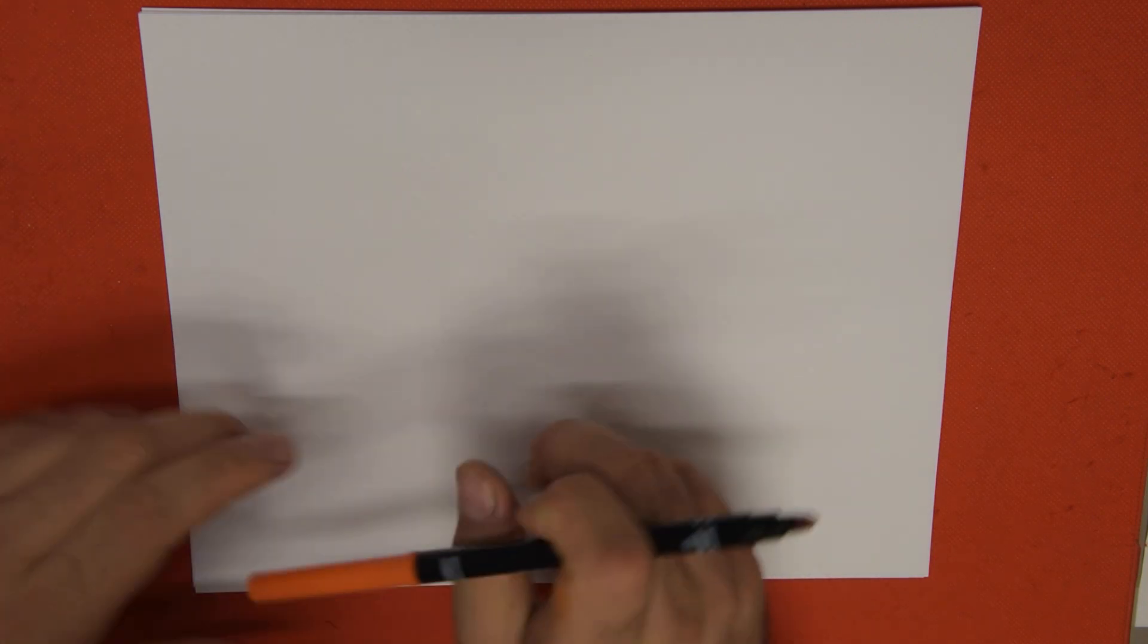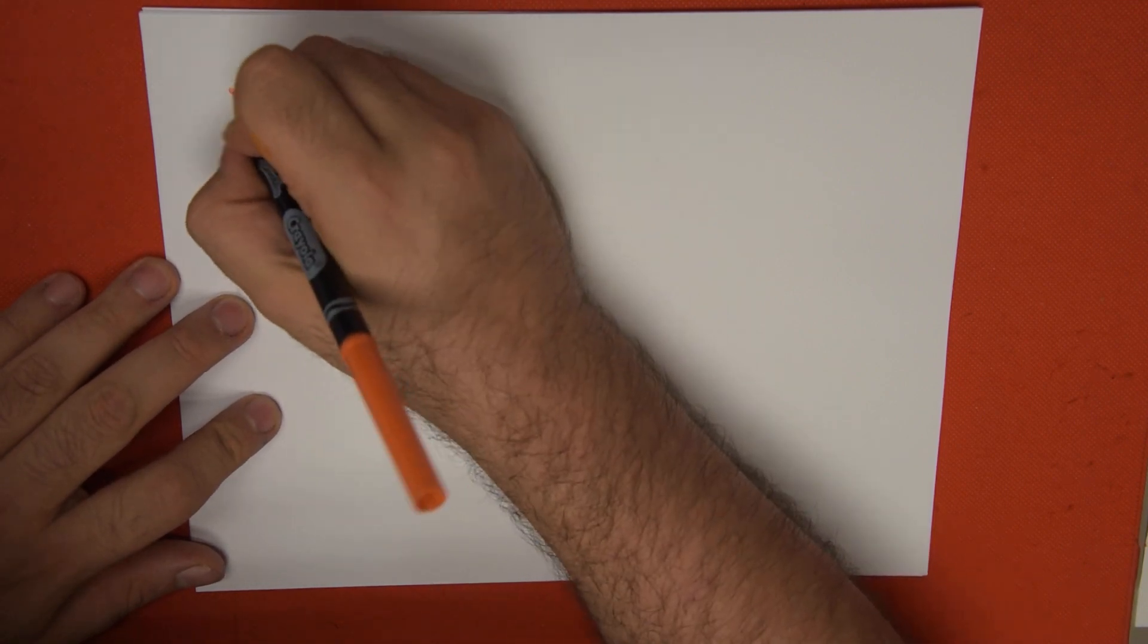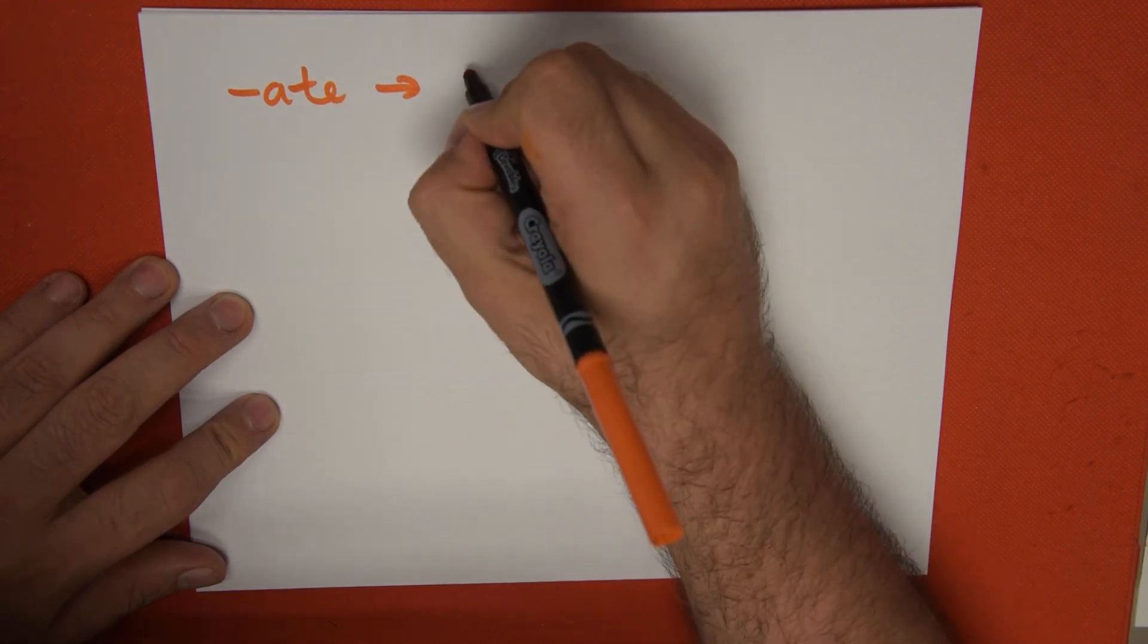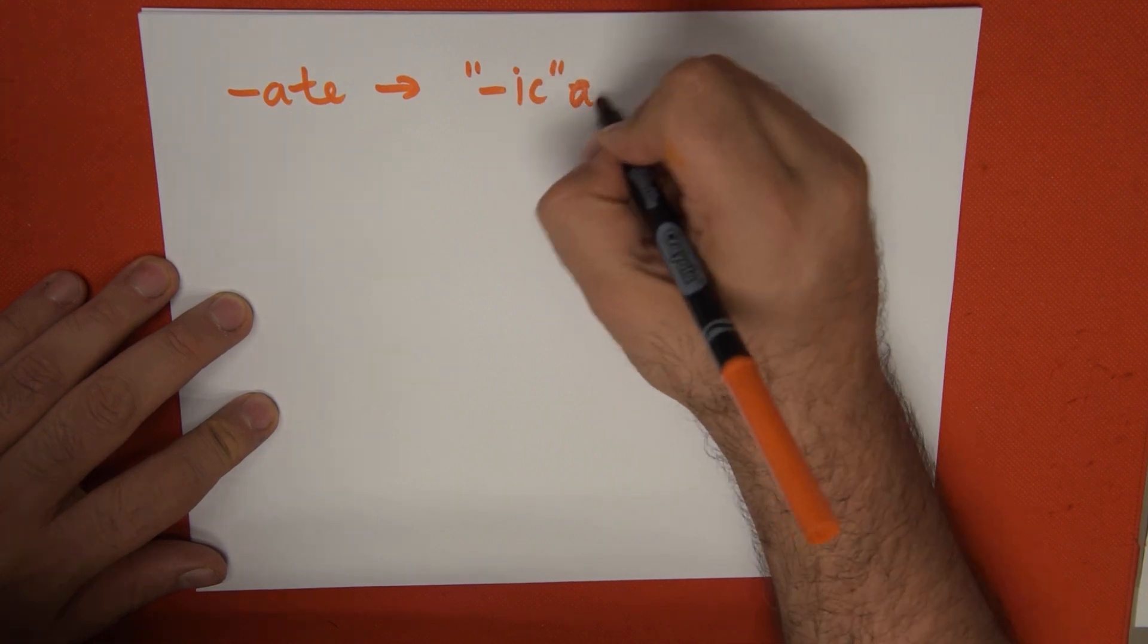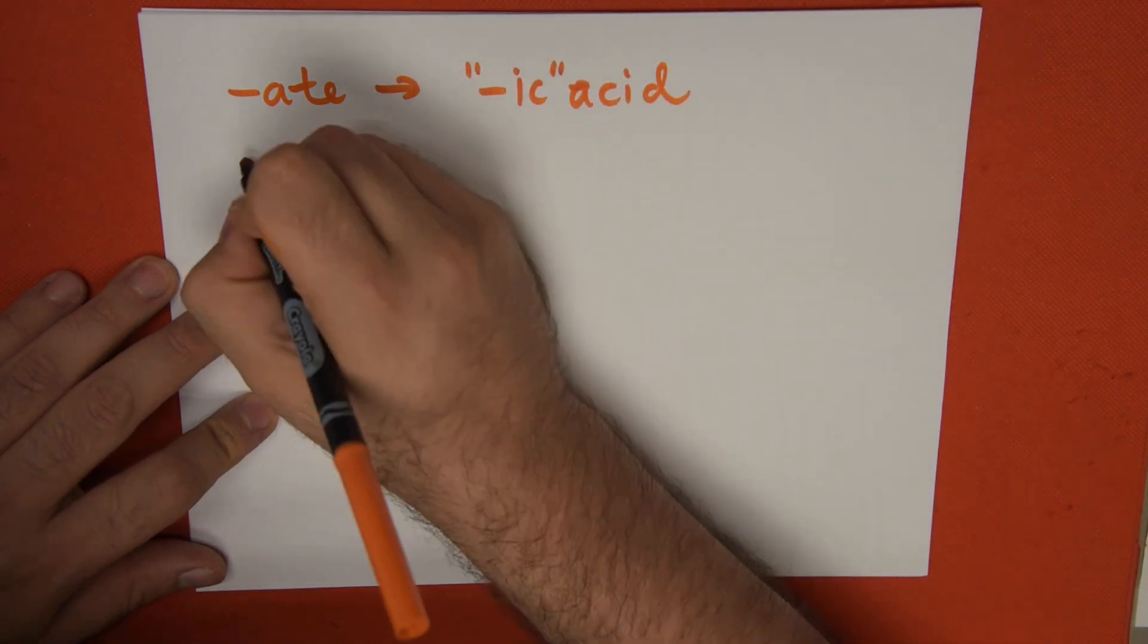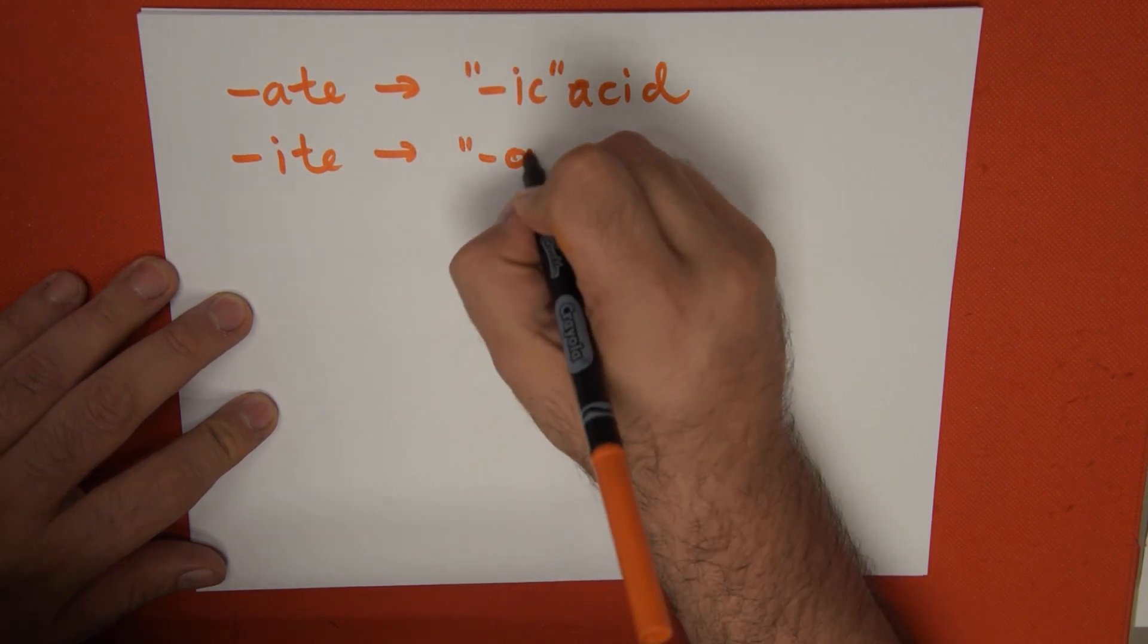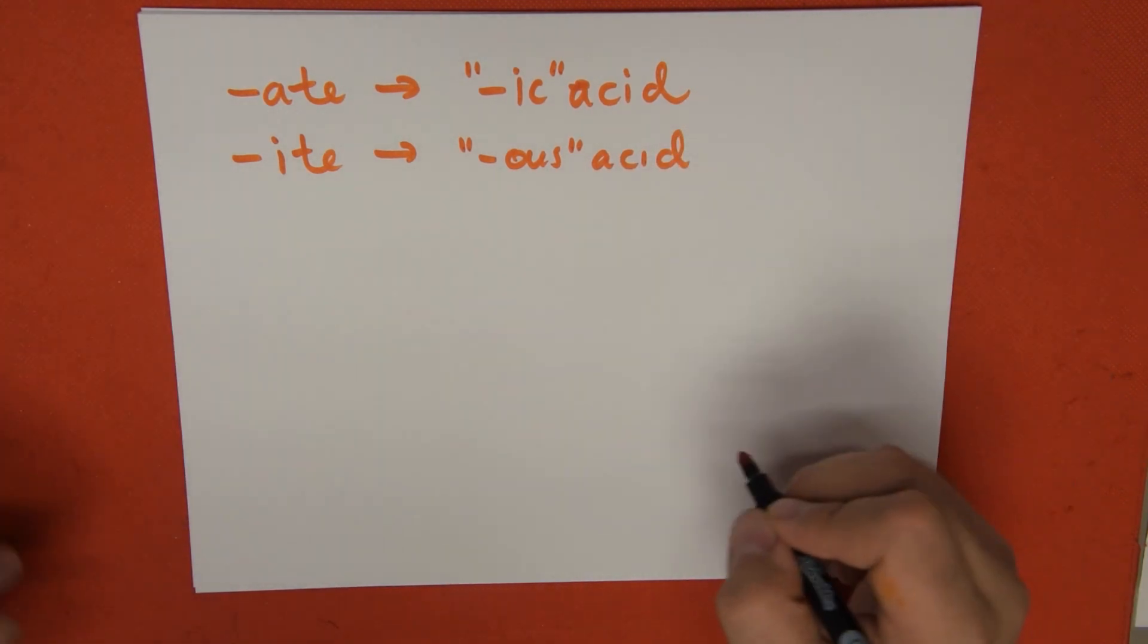What is the naming style for oxyacids? Oxyacids are characterized by taking the name of the anion. If it's an anion that ends with -ate, we're going to transform this into an -ic ending with the word acid attached to it. On the other hand, the -ite ending is going to turn into -ous ending with the word acid on it.